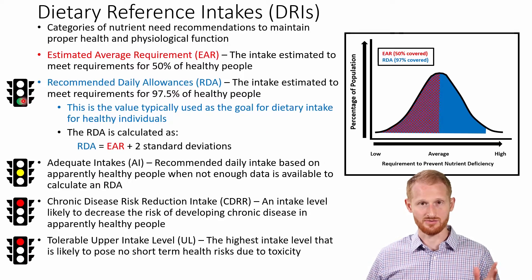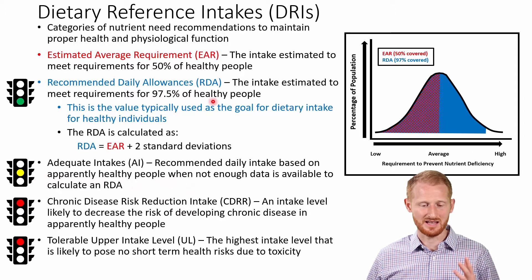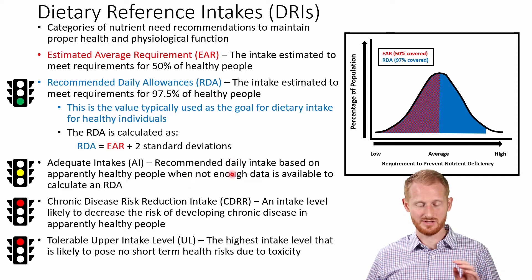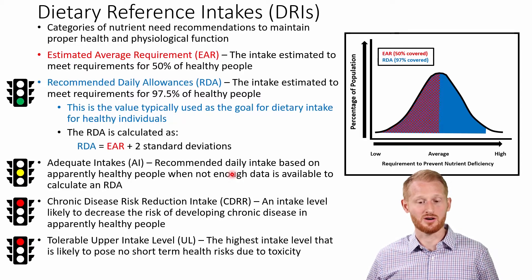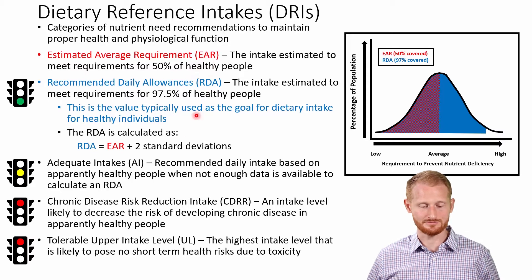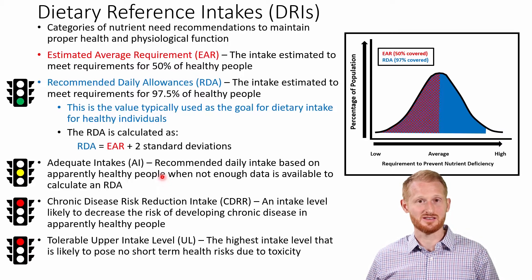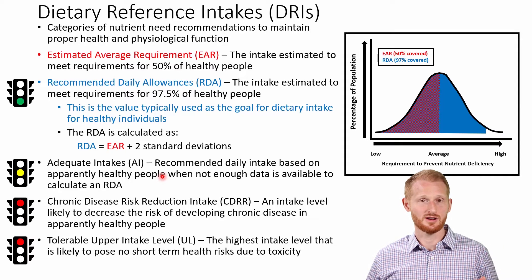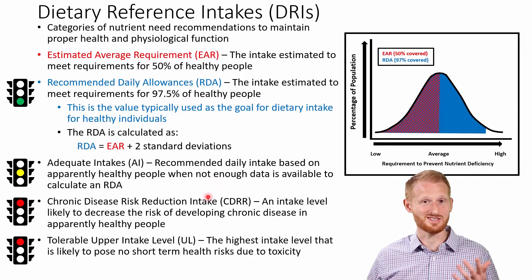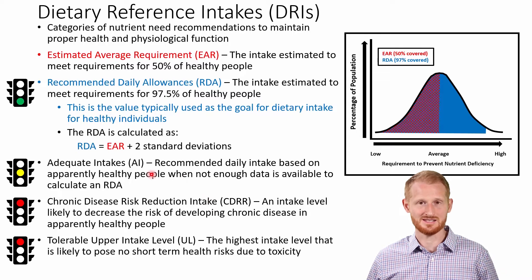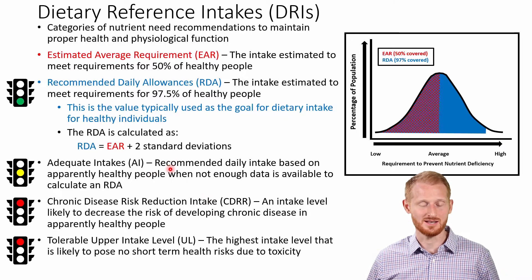Unlike the RDA, which gets a green light, the adequate intake, or AI, gets a yellow light. An AI is a lot like an RDA, but it's not as good — because we don't have enough evidence, or there isn't enough agreement amongst experts in the field, or the need for individuals is much more varied. That makes it very hard to have the strict statistical cut points needed to develop an RDA from the EAR. The adequate intake is the recommendation the U.S. government gives whenever we don't have sufficient evidence for a better recommendation. An example of a nutrient with an adequate intake is water — we don't have an RDA for water.